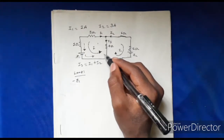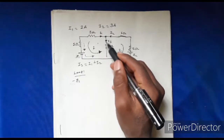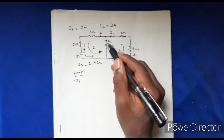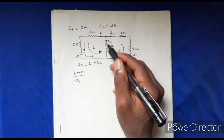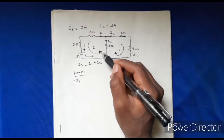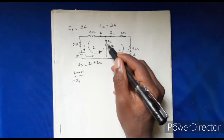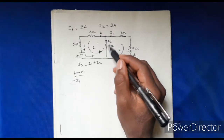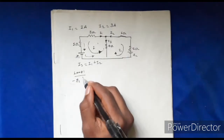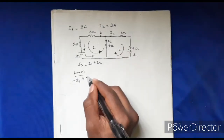Let us start by focusing on the value through E1. The current is positive. This is the current I3. This is the voltage drop — positive. This is positive 4 times I3, so 4I3.